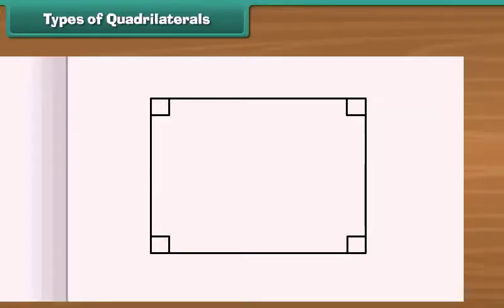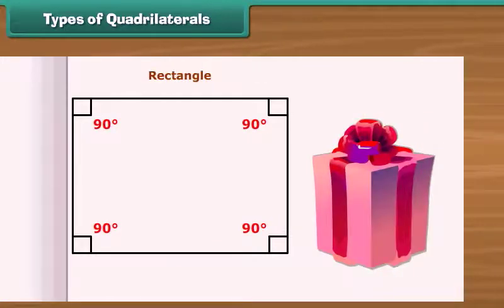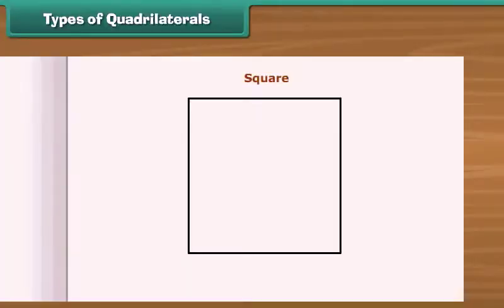A parallelogram in which all angles are right angles, that is 90 degrees, is called a rectangle. For example, this gift pack is a rectangle.